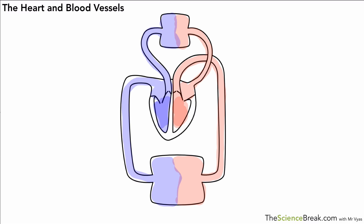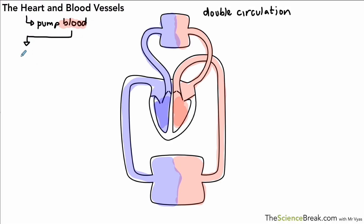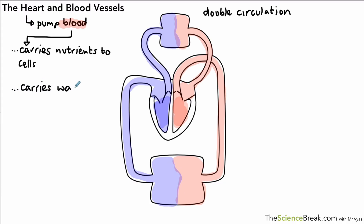The next thing we're going to look at is the idea of a double circulation. Humans and mammals have a double circulation — there are two loops in the circulation of blood around the body. The heart is important because it pumps blood around the body, and blood carries nutrients to all the cells in the body and also carries away waste from those cells, so it delivers nutrients and picks up waste.